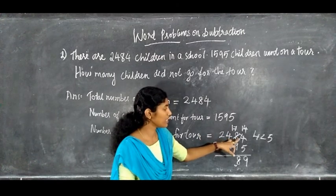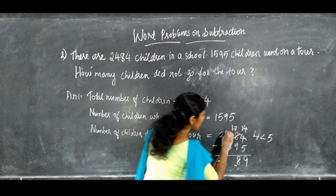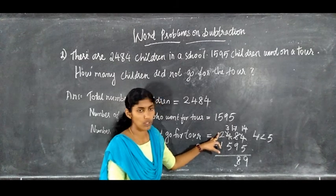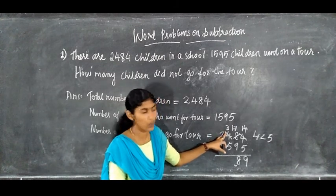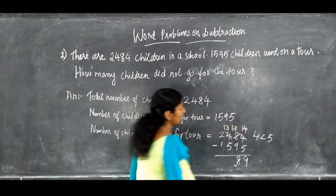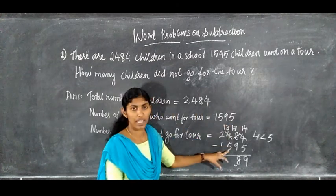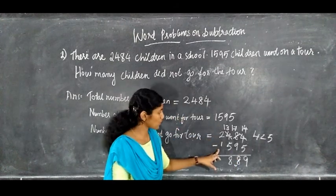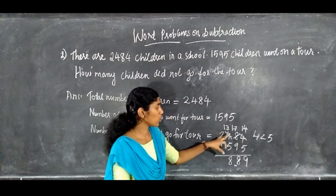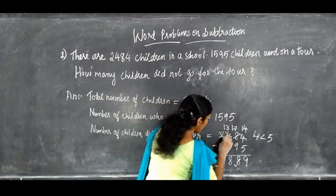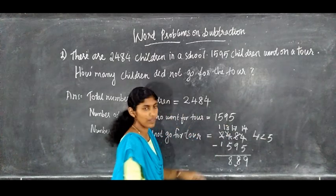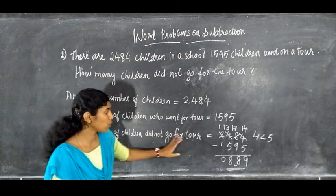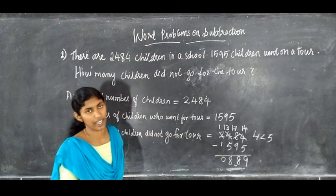Then subtract the hundreds column. Since 100 was borrowed by the tens column, we have only 3 here. But since 3 is less than 5, we borrow from the thousands column, leaving only 1 there. So 13 minus 5 gives 8. Then subtract the thousands: 1 minus 1 equals 0. Therefore the number of children who did not go for the tour is 889.